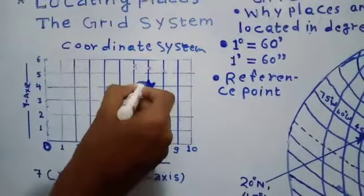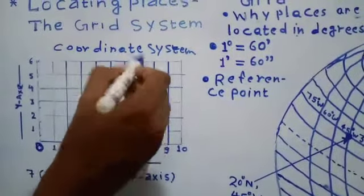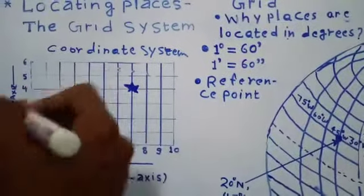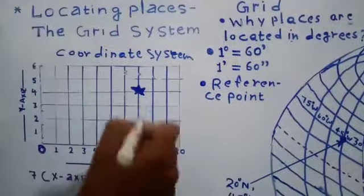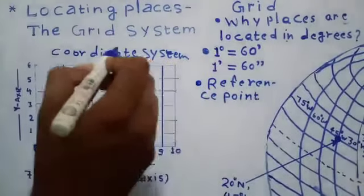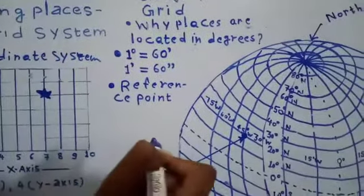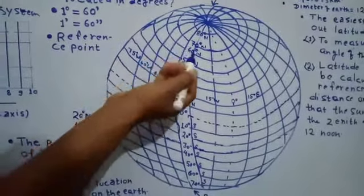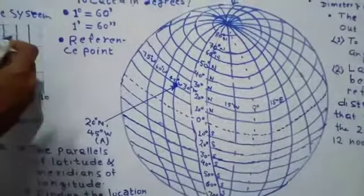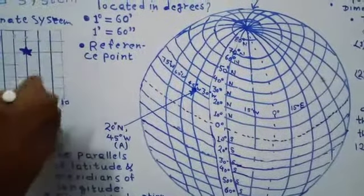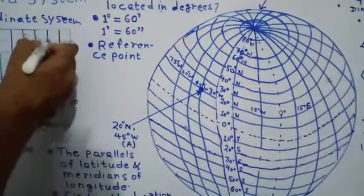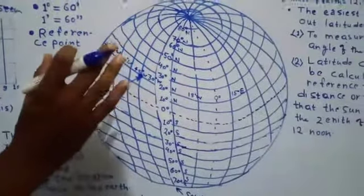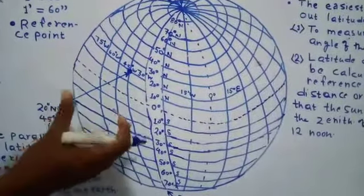Through coordinates, the point of reference can be easily located on our earth's surface. But can we use the same method to locate any place on our earth's surface? No. Because for a 2D diagram — two-dimensional, which has length and width — this works, but on our earth's surface we have a three-dimensional figure: length, width, and depth.